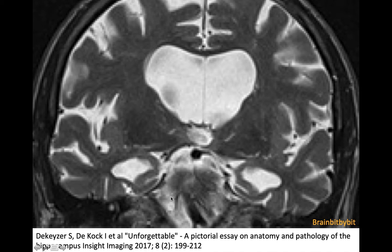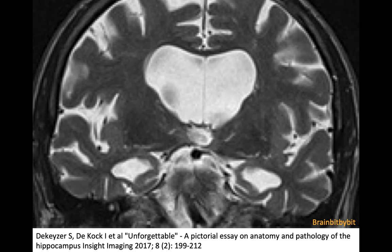In Alzheimer's disease, there is volume loss of the entorhinal cortex and hippocampus, typically without any change in signal intensity, in contrast to hippocampal sclerosis or limbic encephalitis. In neurodegenerative diseases, including Alzheimer's, the neurons die quietly and slowly, without causing any change in signal intensity. The most important role of MRI in Alzheimer's disease is to exclude other causes of dementia and to assess the regional volume loss.